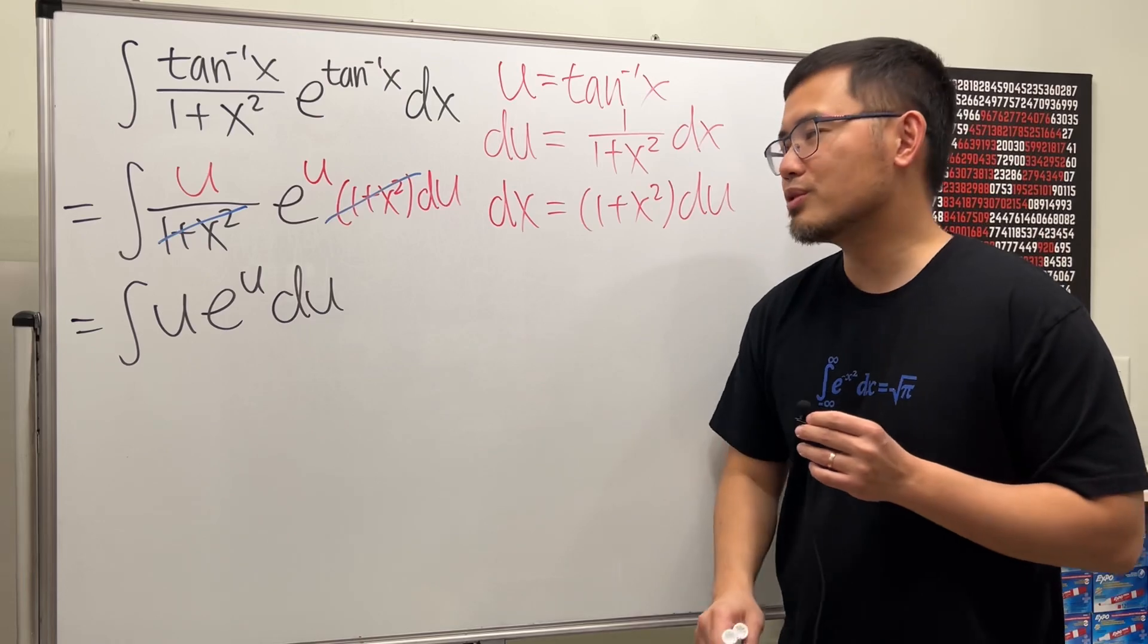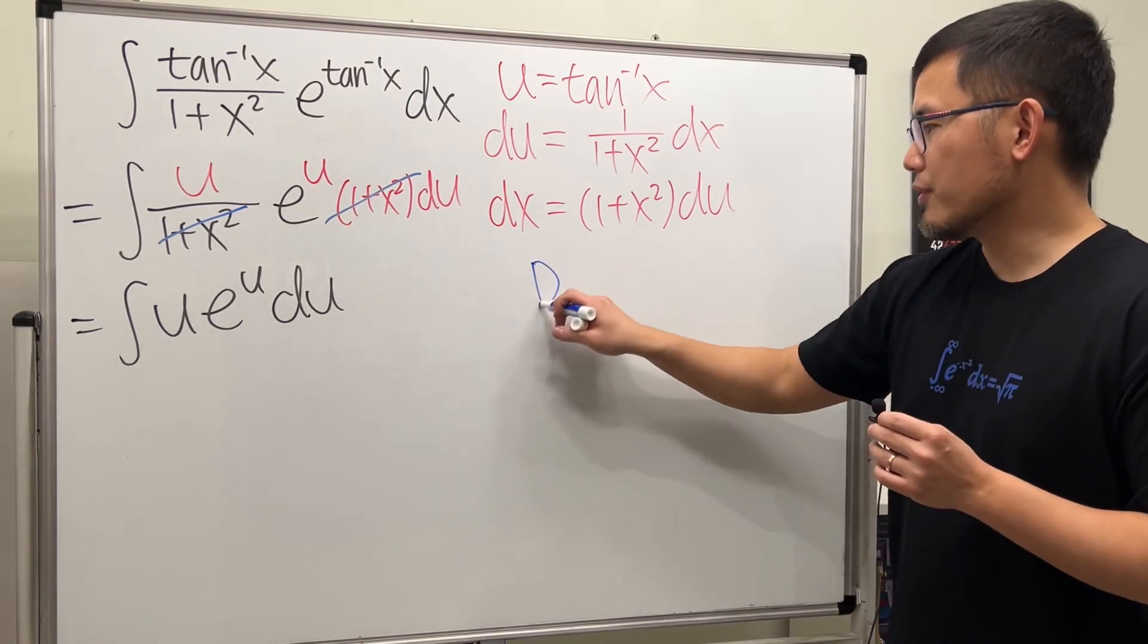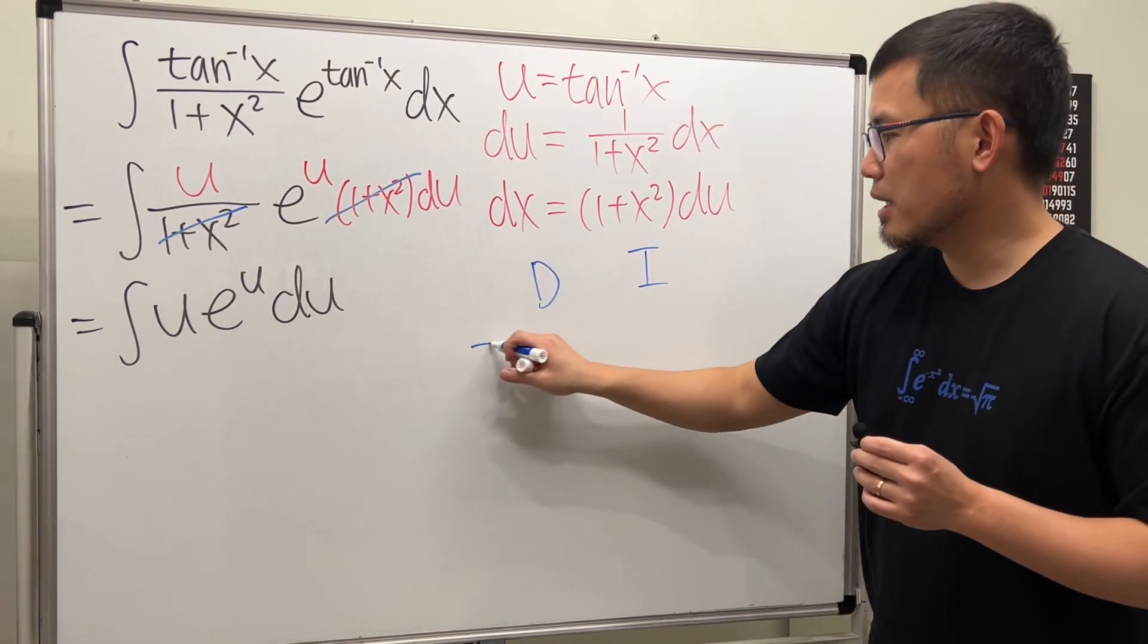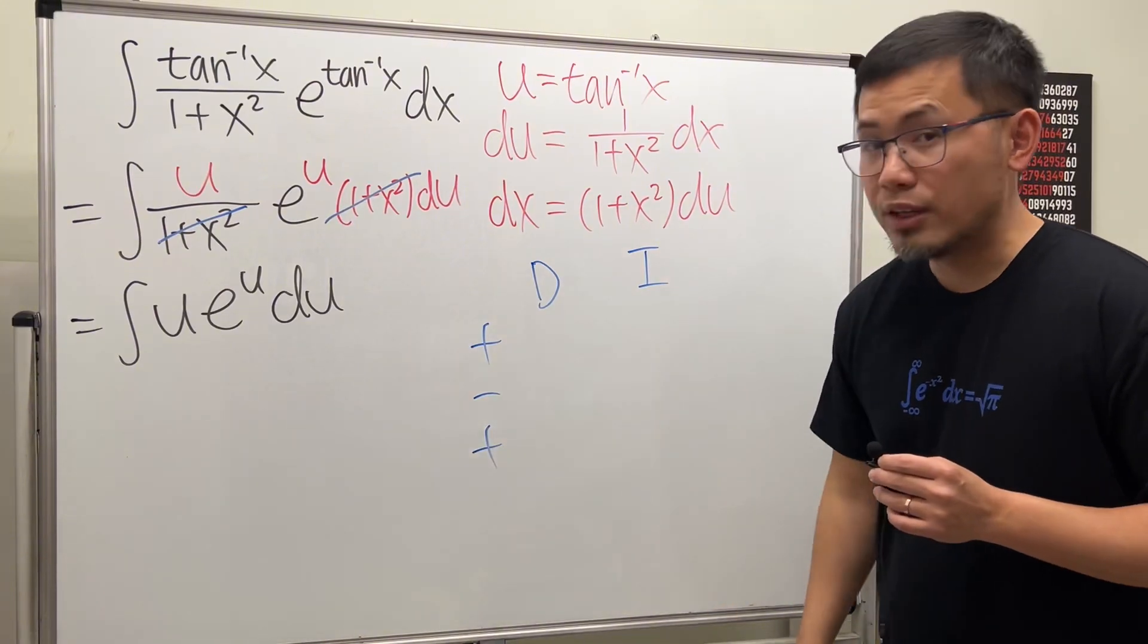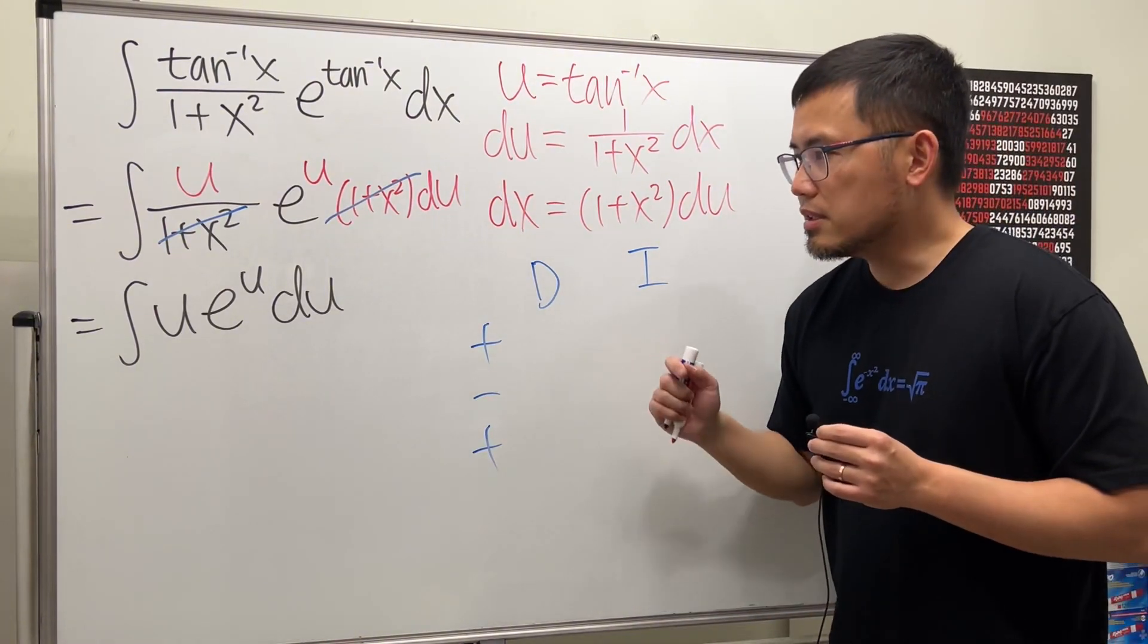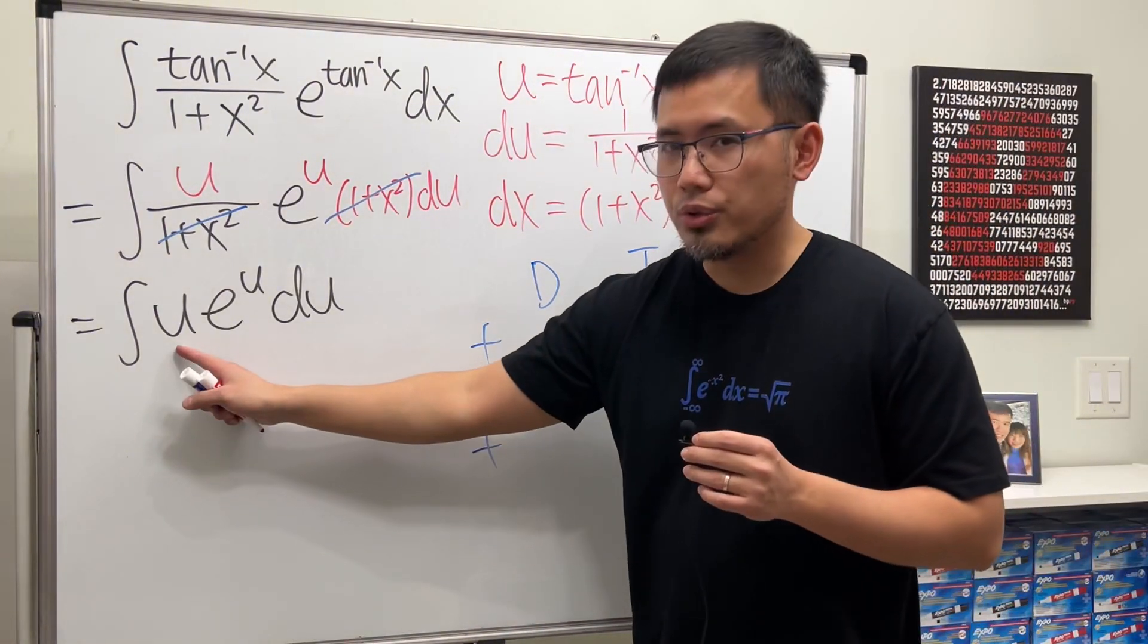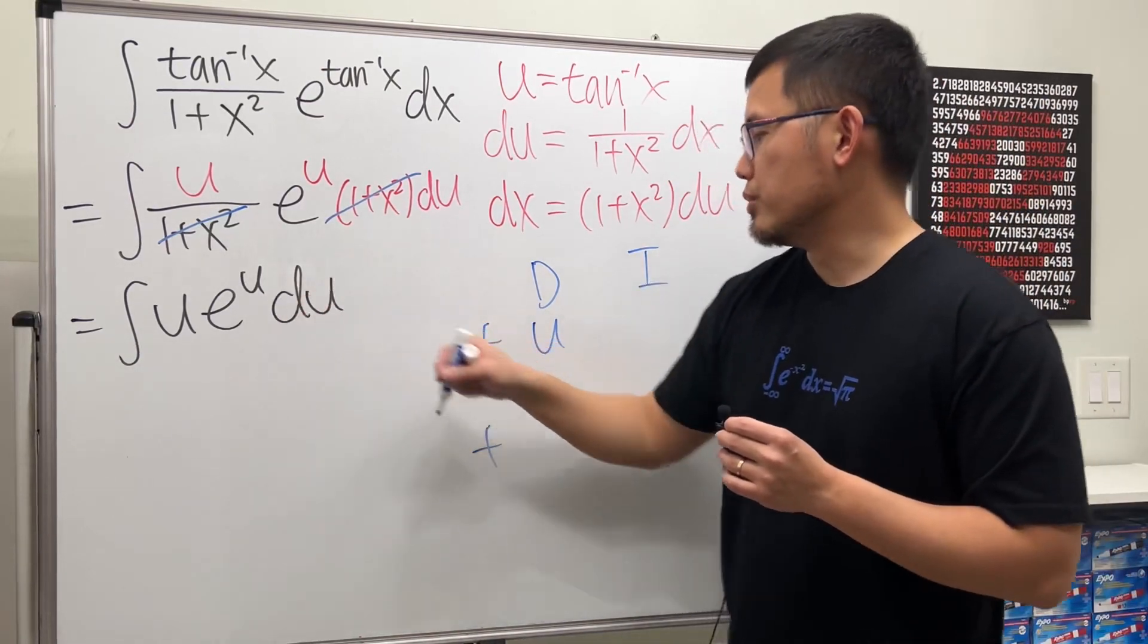So how do we work out this kind of integration? Well, the key right here is to do integration by parts. So of course, let's do the D and then I plus minus plus on the side to get ready.